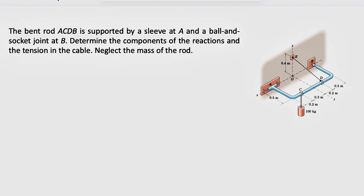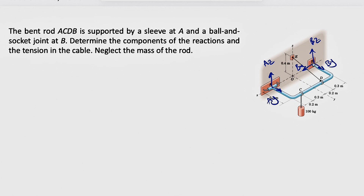We have a ball and socket at point B, meaning we need to consider three different forces: one along X, one along Z direction, and one along Y direction — BY. So we have three unknowns there. We have a sleeve at point A, meaning it can freely rotate and freely move in the X direction, so we don't consider any friction — no force in X direction. But movement is still limited in Z and Y, so we consider AZ and AY. No X because it can move in X direction. The last one would be the tension in cable DE, shown as T.